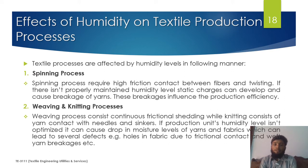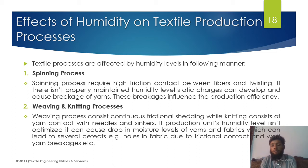Effects of humidity on textile production processes: textile processes require five major steps, and in each step the humidity level must be maintained at an optimum level to maintain product quality. The first process is spinning — in spinning there is high friction contact between fibers and twisting occurs. If humidity level is not maintained properly, yarn moisture can be disturbed, causing static charge development and yarn breakages.